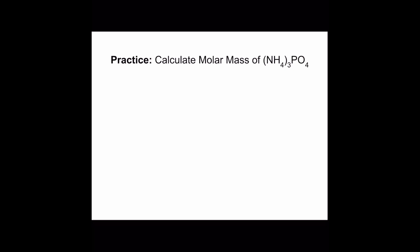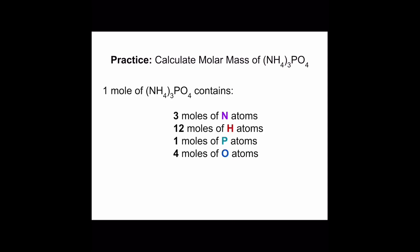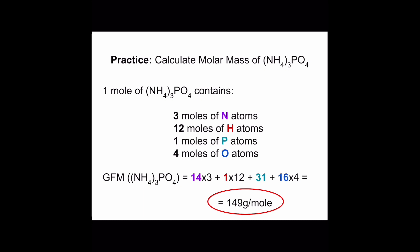Now ammonium phosphate. Pause the video and list all the elements and the corresponding number of moles of each element. The answer: 3 moles of nitrogen, 12 moles of hydrogen, 1 mole of phosphorus, and 4 moles of oxygen. Now pause the video and calculate the gram formula mass, also known as molar mass, of this compound. Did you get 149 grams per mole?